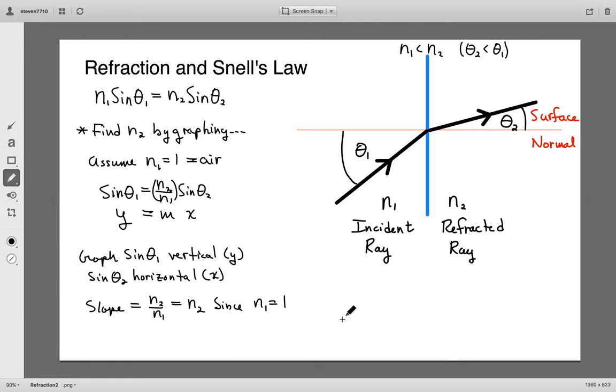Okay? So that's the first way, and the most accurate way in which you're going to calculate the index of refraction of the unknown N2, be it a piece of glass or plexiglass or possibly water. So that's the first part of the lab.